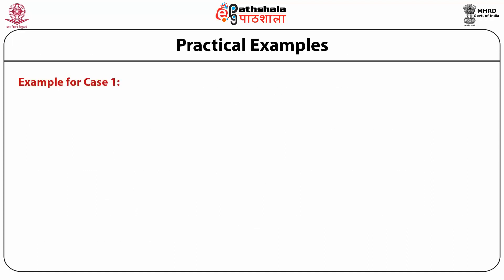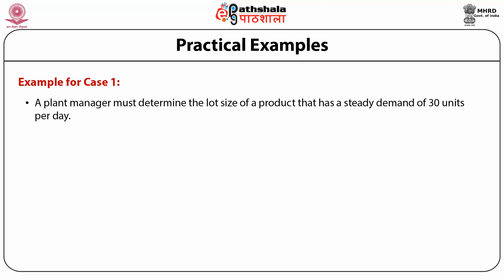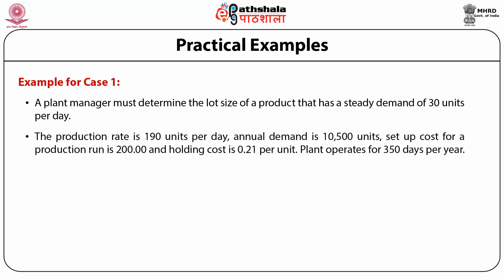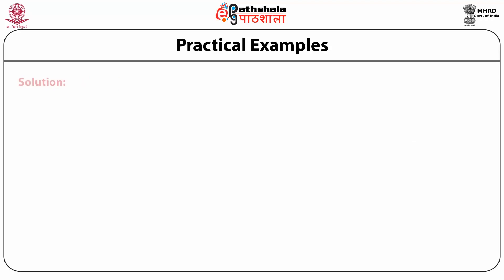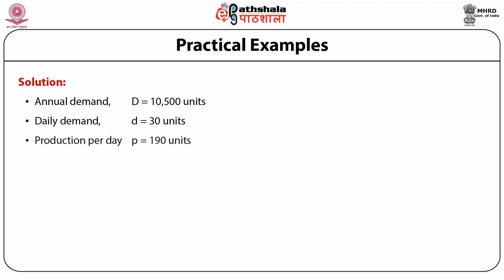Practical Example — Case 1. A plant manager must determine the lot size of a product with steady demand of 30 units per day, production rate of 190 units per day, annual demand of 10,500 units, setup cost of 200, and holding cost of 0.21 per unit. The plant operates for 350 days per year. Calculate: economic production lot size, total annual cost, time between orders (cycle length), and production time per lot. Given: D = 10,500 units, d = 30 units/day, P = 190 units/day, S = 200, H = 0.21.